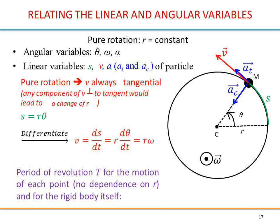Let's define at this point the period of revolution T. This is the time it takes for a full revolution. Therefore it is the distance traveled, which is 2 pi R, divided by the speed. The speed here connects via V equals R omega, so R disappears and you find T equals 2 pi divided by omega. The unit is in seconds.